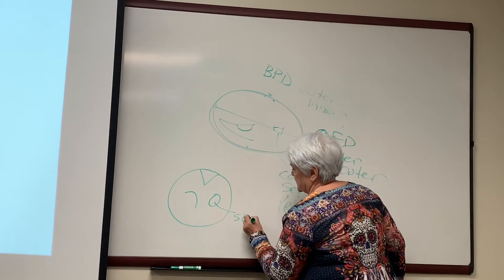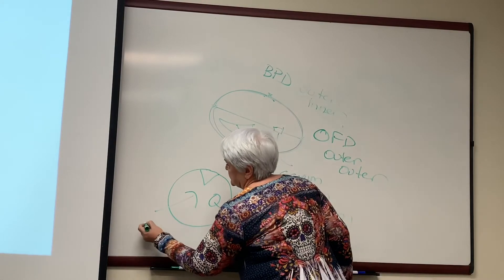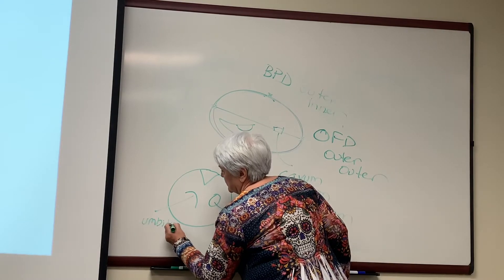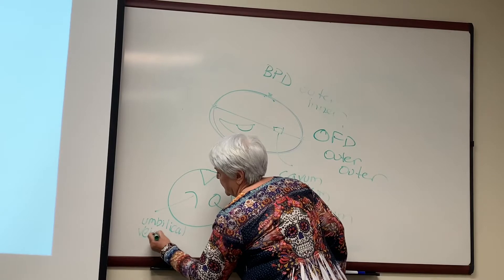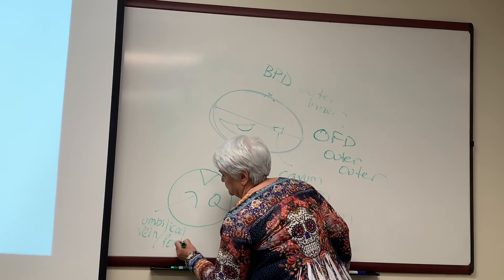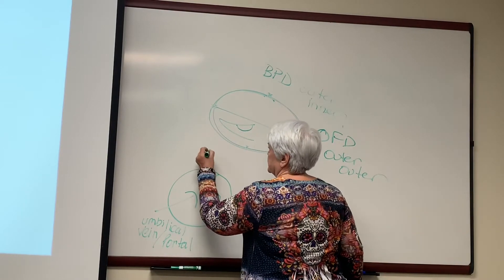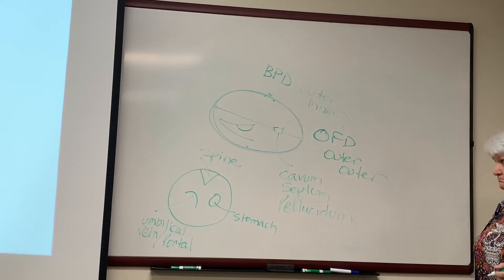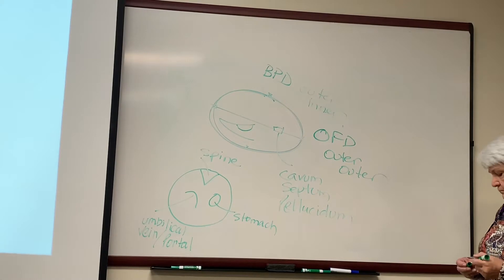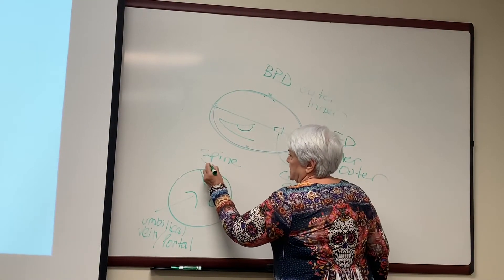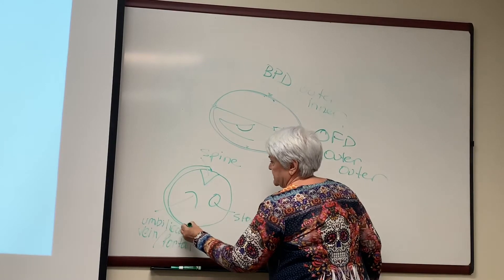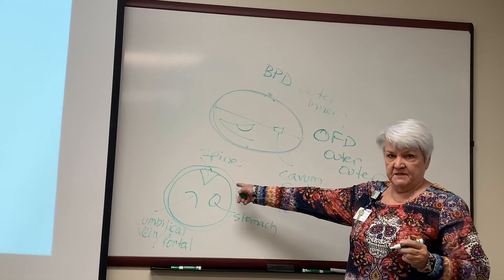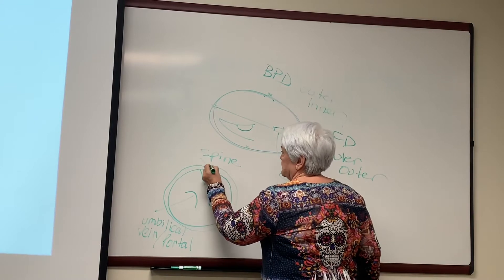This is the stomach. This is my umbilical vein and the portal system. This is my spine. I'm going to look at my skin. So this is my skin. I'm going to include the skin on this baby. On the AP measurements. So I'm going to measure this.